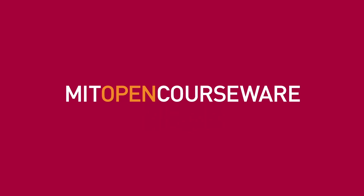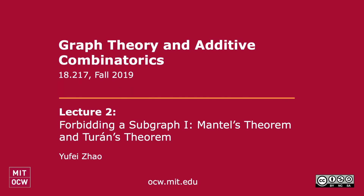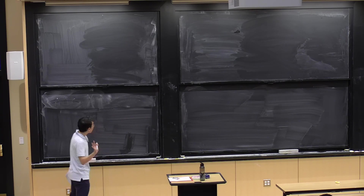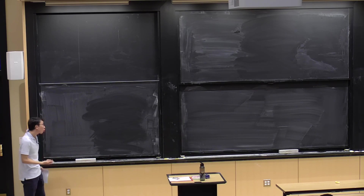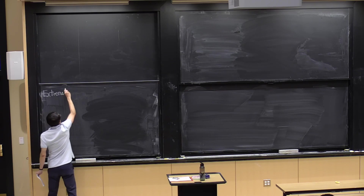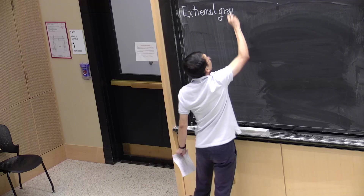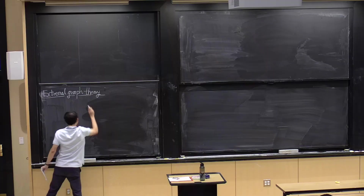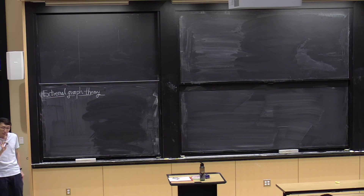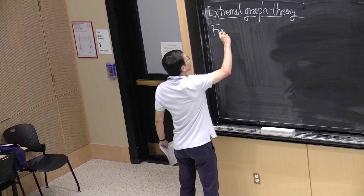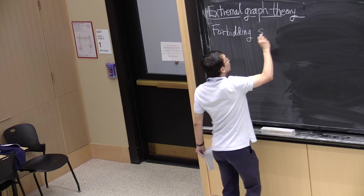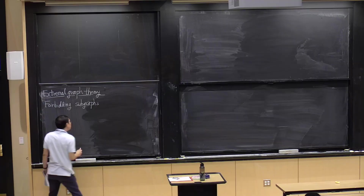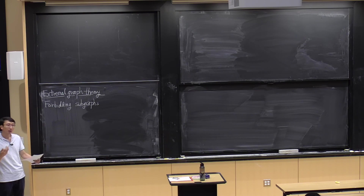The first topic in this course is extremal graph theory. In particular, there is a whole class of problems which have to do with what happens if you forbid a specific subgraph and ask: what's the maximum number of edges that can appear in your graph?